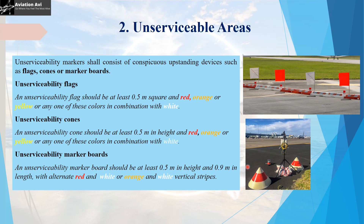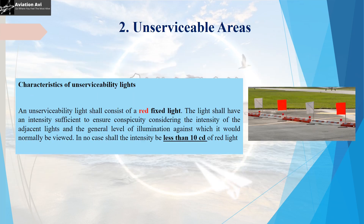As you can see in the image, this is an unserviceability cone. There are also unserviceability marker boards used, which have a height of at least 0.5m and a length of 0.9m, and alternate red and white or orange and white vertical stripes may be used. As you can see, these are the unserviceability marker boards. There should also be an unserviceability light installed on the marker boards or the area denoted as an unserviceable area or area of restricted use. The light should be installed taking into consideration the surrounding illumination, and in no case should the intensity of the light be less than 10 candela. The light should be red in colour.